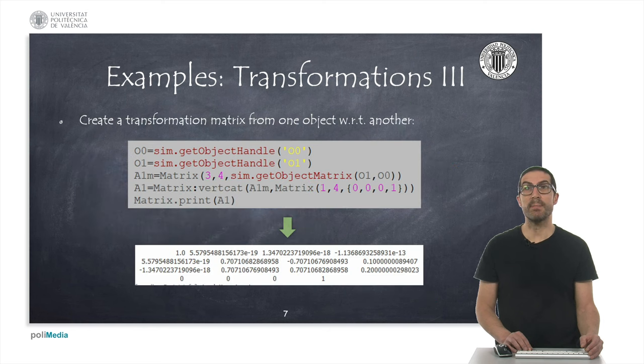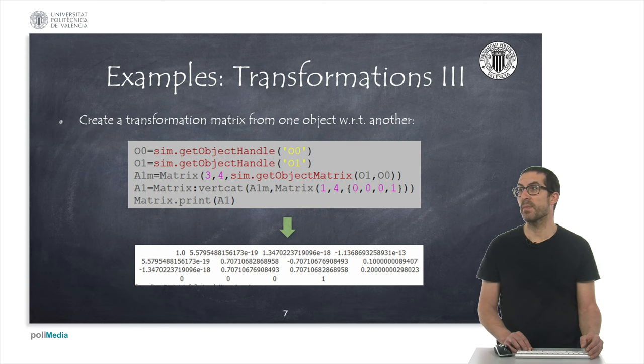Here, I show another example that actually performs just the opposite. Starting from an existing object in CoppeliaSim, we use the getObjectMatrix function to obtain a table with 12 values corresponding to the first three rows of the homogeneous transformation matrix. Then, we make a vertical concatenation with a vector containing three zeros and a one to fill the last row of the transformation matrix. So, we can build and create the matrix A1.